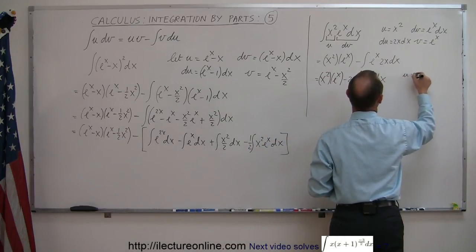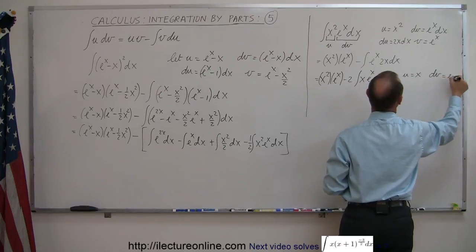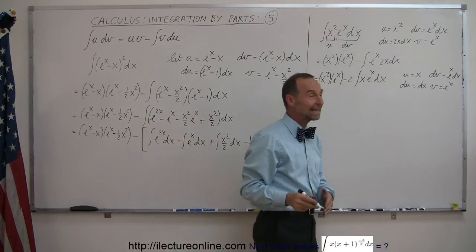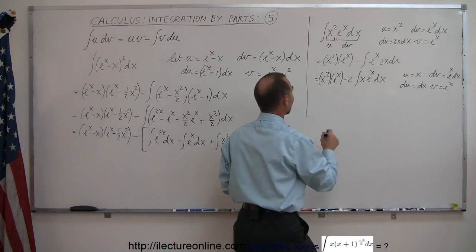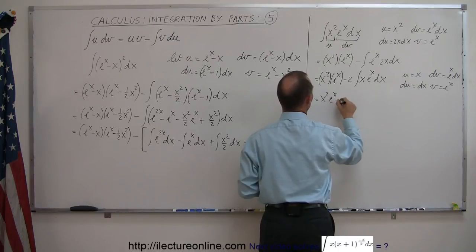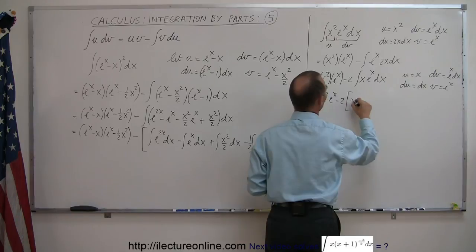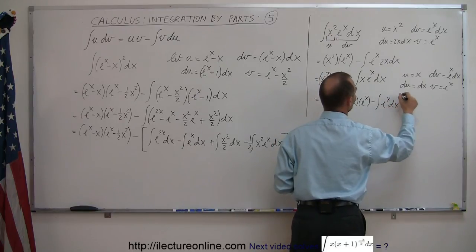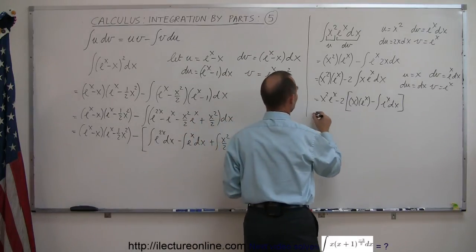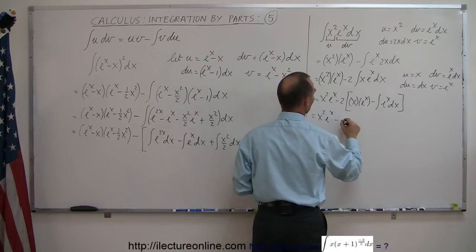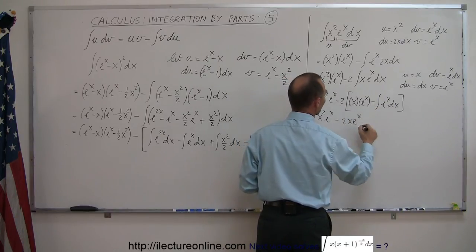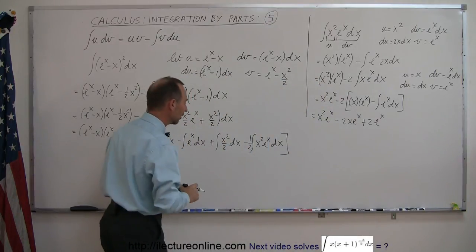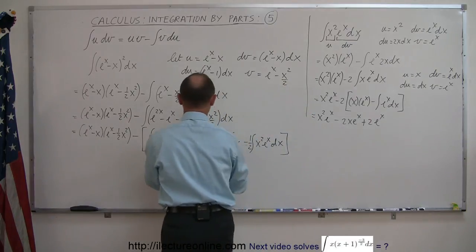So I let u equal x and dv equal e to the x dx, which gives du equal dx and v equal e to the x. Substituting in — this is the third time I'm applying integration by parts — I get x squared e to the x minus 2 times: x times e to the x minus the integral of e to the x dx. That becomes x squared e to the x minus 2x e to the x, and minus 2 times this becomes plus 2 times e to the x. Now this result is ready to be substituted back in.